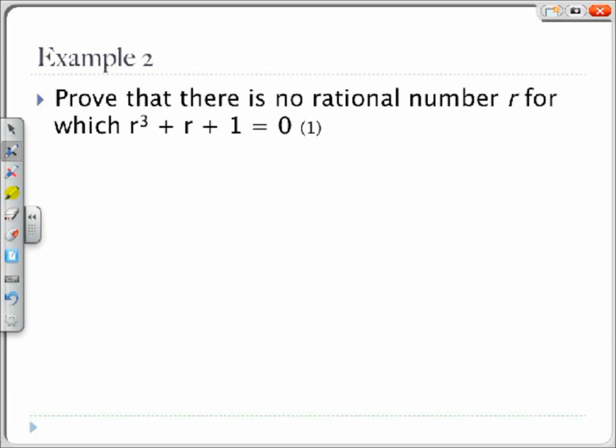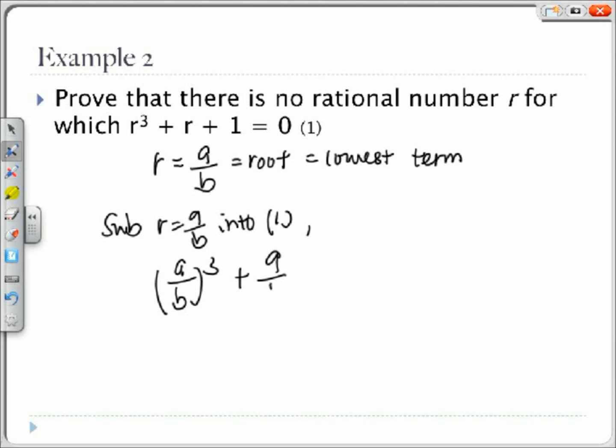For example 2, we will use proof by contradiction to show that there is no rational number r for which r cubed plus r plus 1 equals 0. We are going to assume that r equals a over b is a root, where a and b are integers, and a over b is in lowest terms. So we substitute a over b into equation 1. And what we get is a over b cubed plus a over b plus 1 equals 0. This is going to be our second equation that we will use. Now we are going to multiply both sides of the equation by b cubed.